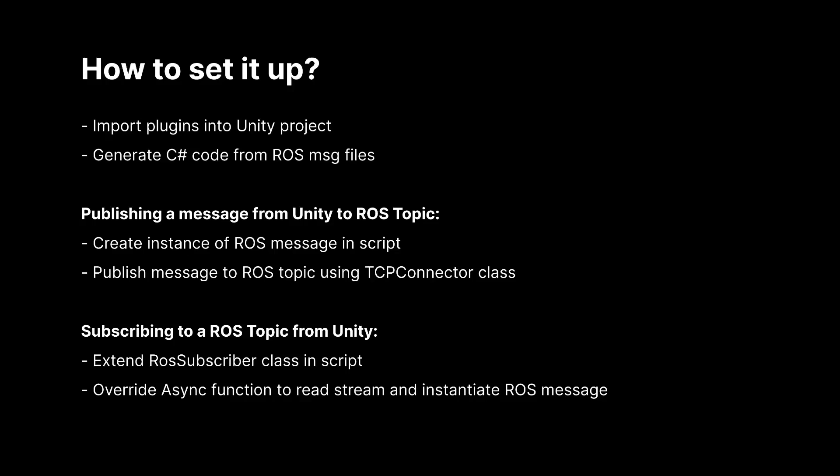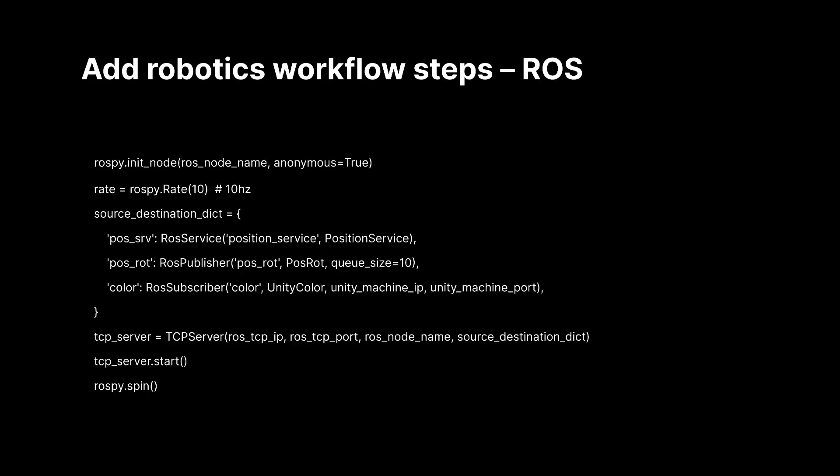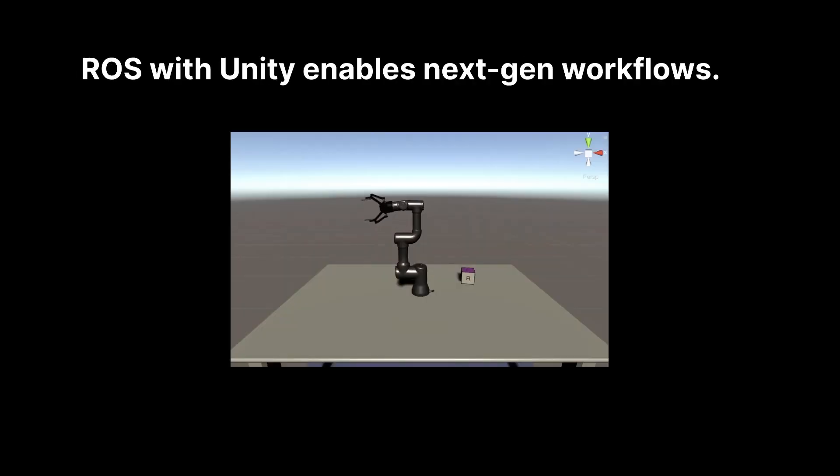How is it set up? First, you need to import the plugins into your Unity project. Then you can generate the C# classes from ROS message files. If you are looking to publish a message from Unity to ROS, you create an instance of one of those generated messages and then call the TCP connector class with a .publish function call and send it on its way. If you are subscribing, you need to extend the ROS subscriber class in a script and override the asynchronous function to read a stream and instantiate the ROS message. On the ROS side, we have the TCP endpoint. This code snippet is taken directly from our tutorials. The key thing to point out is the source destination dictionary that receives a key from every message sent from Unity and uses that to determine which publisher or service to call on the ROS side. Likewise, this key is used to determine which subscriber to pass messages along to in Unity from ROS.